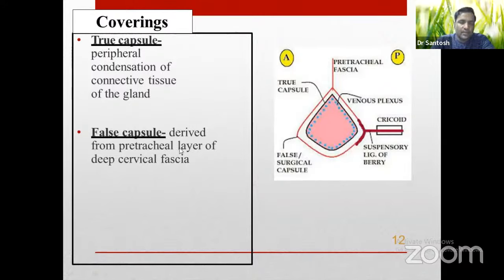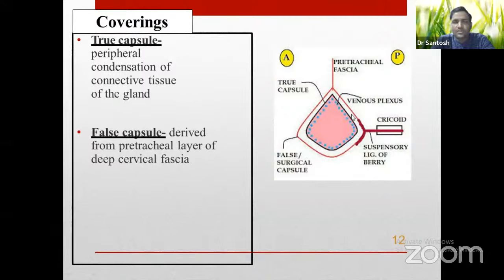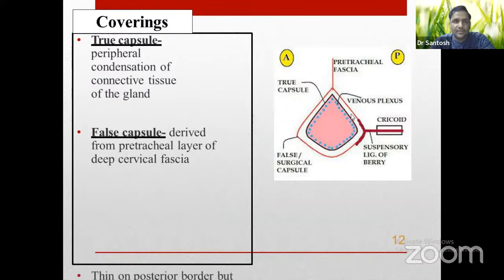There is a venous plexus lying beneath the true capsule. A similar arrangement exists in the prostate, but in the prostate the venous plexus lies between the true and false capsule. During thyroidectomy, we remove the thyroid gland with the true capsule to prevent bleeding, because the venous plexus is beneath the true capsule. In contrast, during prostatectomy, the prostate is removed without the true capsule because its venous plexus lies between the two capsules. The false capsule is the pre-tracheal fascia; the true capsule is the peripheral condensation of the gland itself.